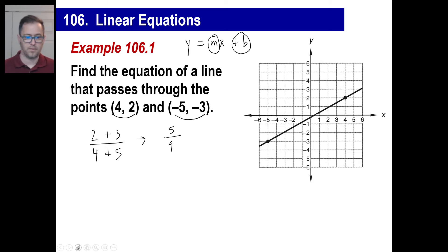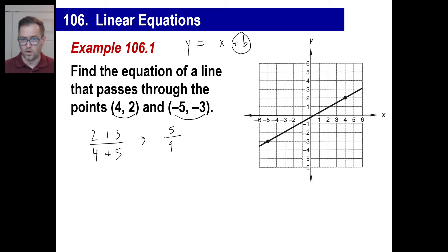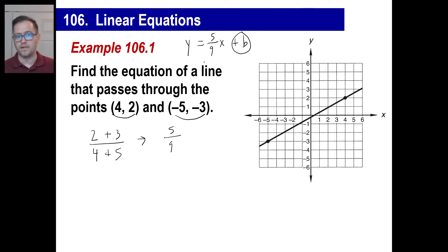We've got half of what we need — figured it out just by using the slope formula. By the way, if you ever get stuck and your brain freezes and you don't know the slope formula, just get a piece of graph paper, plot the two points, and count. It's not the end of the world. We don't always remember every formula.